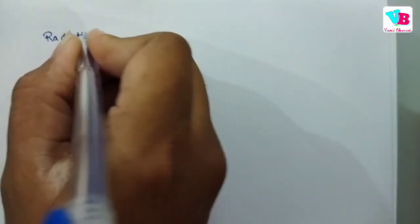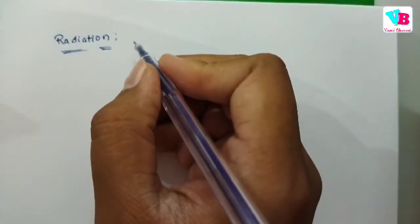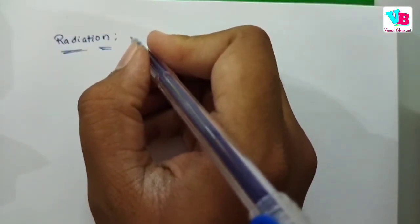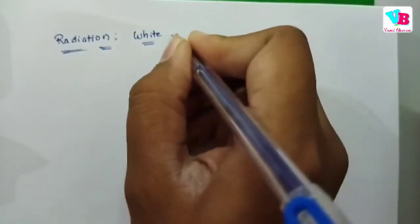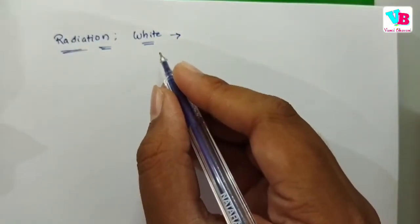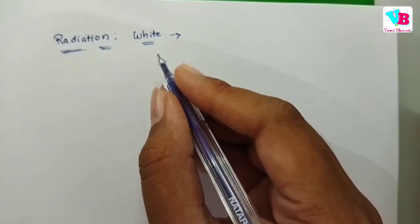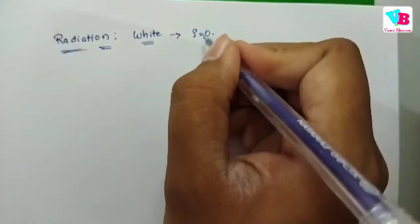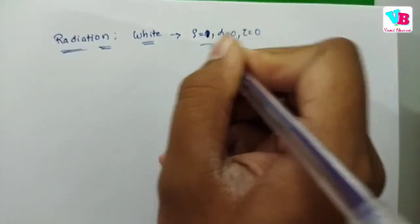There are some definitions in radiation. What do you know in radiation? You are already familiar with transparent, black, and opaque bodies. Now, what about the white body? White will not absorb heat — it will only reflect. So here, rho is 1, alpha is 0, and transmissivity is 0. This is the white body condition.